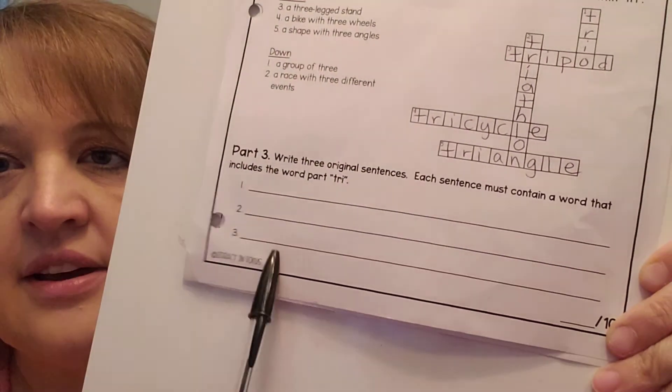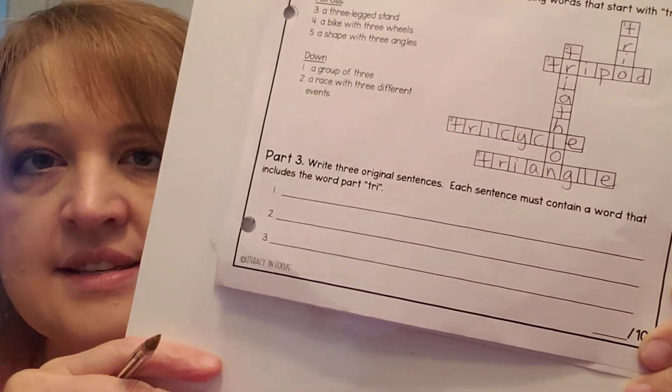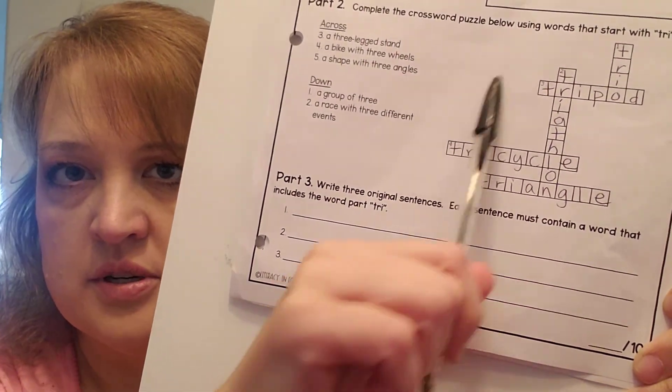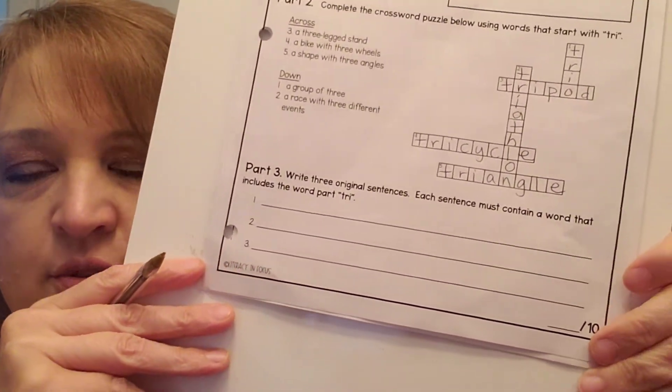All right, so down here, you're going to write your three sentences using these words. Any three of those words. Make sure that you have capitals and punctuation marks. Make sure that your words are spelled correctly. All right, my friends, you are done with this packet. Save it for your portfolio. I'll send out an email to parents as well, but save it, and you can put it in your portfolio. All right, I'll talk to you later. Bye.